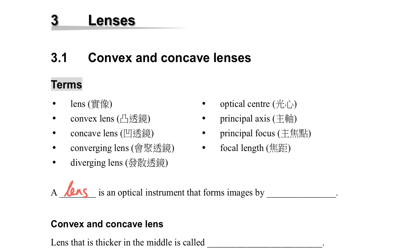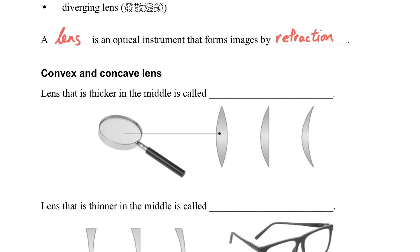This chapter is about lens. A lens is an optical instrument that forms images by refraction. Actually, we can see lenses everywhere in our daily life.